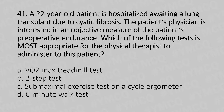Option A: VO2 Max Treadmill Test. Option B: 2-Step Test. Option C: Submaximal Exercise Test on a Cycle Ergometer. Option D: 6-Minute Walk Test. And the answer is Option D: 6-Minute Walk Test.